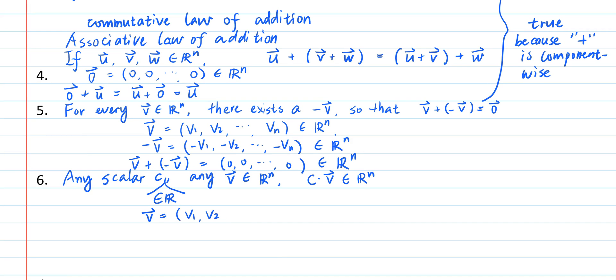And this property has to hold for any real number c. This property is true because for any n-tuple v1, v2 to vn, those components are all real numbers. And for any real number c, the scalar multiple is an n-tuple of the real numbers cv1, cv2, etc., cvn.